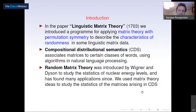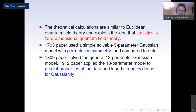This data comes from compositional distributional semantics, which associates matrices to certain classes of words using algorithms in natural language processing. Random matrix theory originates from Wigner and Dyson, who used it to study the statistics of Hamiltonians and nuclear energy levels, and it has also found applications in many different areas. We used matrix theory techniques to study the statistics of the matrices that arise in compositional distributional semantics.